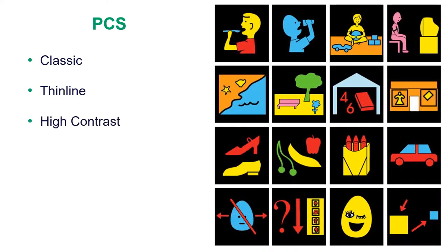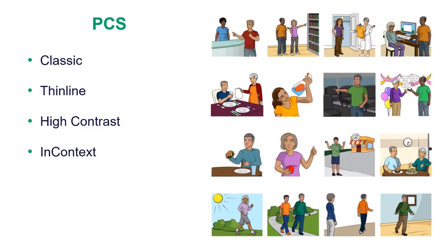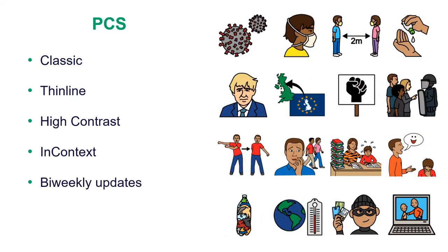High contrast symbols are designed to support learners with a visual impairment by using high contrast colours meant to be displayed on a black background. And In Context — contextually rich and realistic illustrations that can be used as single meaning icons or visual scenes. Bi-weekly updates mean symbols are always being added that are current and relevant, allowing communication and learning to happen in real time.